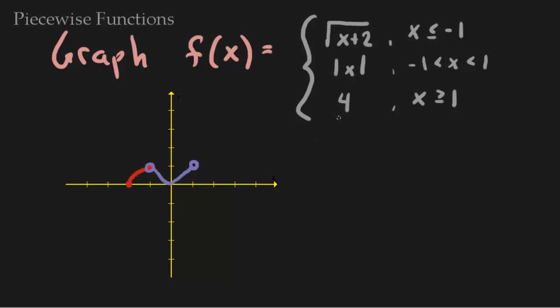Finally we graph y equals 4. This is a horizontal line when x is greater than or equal to 1. When x is 1, we get y equals 4, so I plot that point with a closed dot. Since it's greater than or equal to 1, we get to go that way forever.